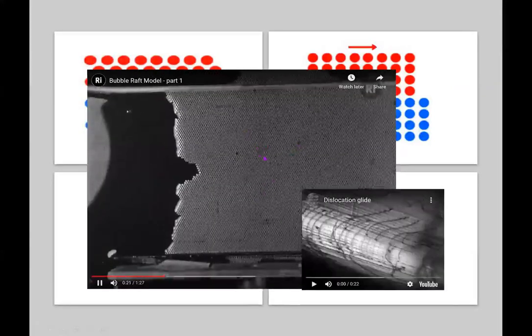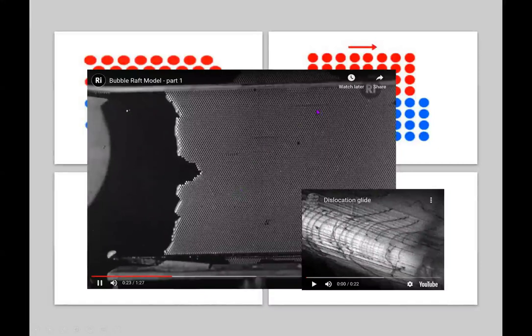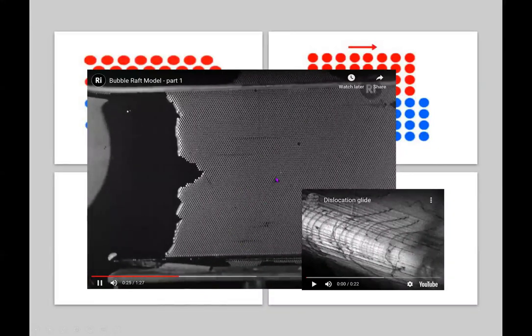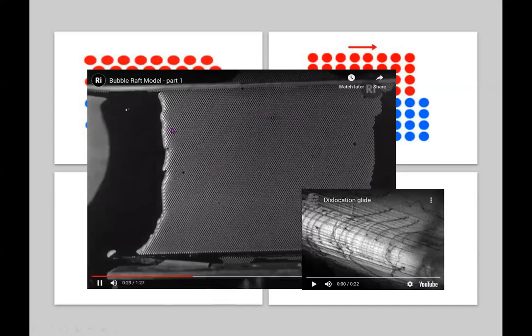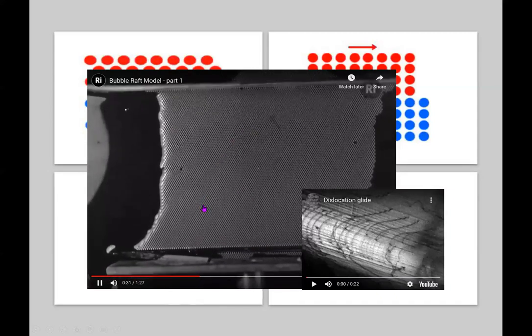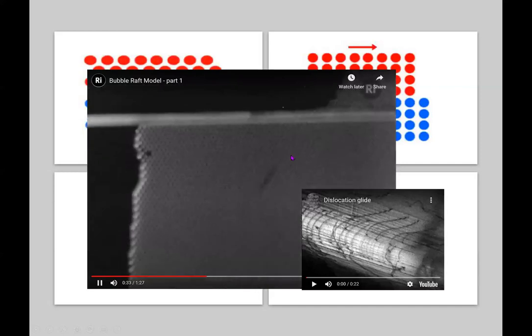What do we get? There they are. Seeing these lines that come running, zipping across, there it goes. Those are the dislocations. As they zip across this structure, we're displacing, there it is, we're displacing one row of bubbles relative to the other.